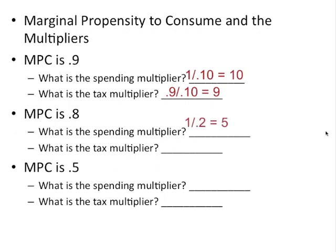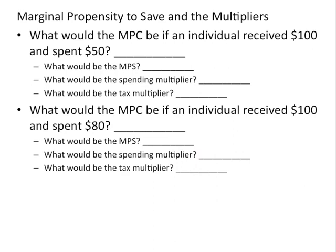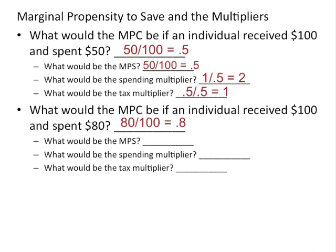If MPC is 0.8: spending multiplier = 1 over 0.2 = 5; tax multiplier = 0.8 over 0.2 = 4 — always 1 less. If MPC is 0.5: spending multiplier = 1 over 0.5 = 2; tax multiplier is 1. If an individual received $100 and spent $80, MPC = 0.8 and MPS = 0.2; spending multiplier = 1 over 0.2 = 5; tax multiplier = 4. Remember, when the government reduces taxes it must rely on consumers and businesses to spend the money, and they may not spend all of it.